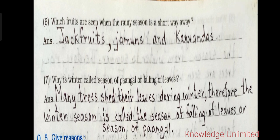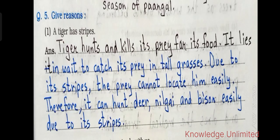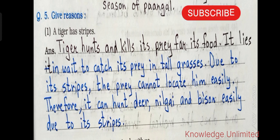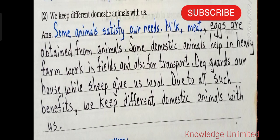Now, give reasons. First one: a tiger has stripes. Answer: the tiger hunts and kills its prey for food. It lies in wait to catch its prey in tall grasses. Due to its stripes, the prey cannot locate it easily, therefore it can hunt deer, nilgai, and bison easily.